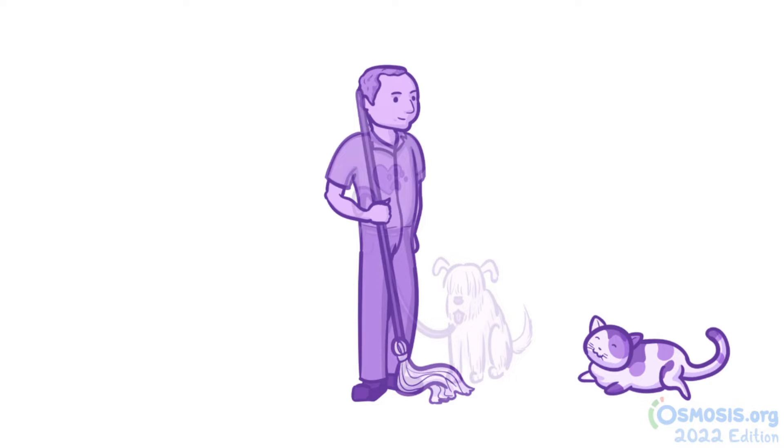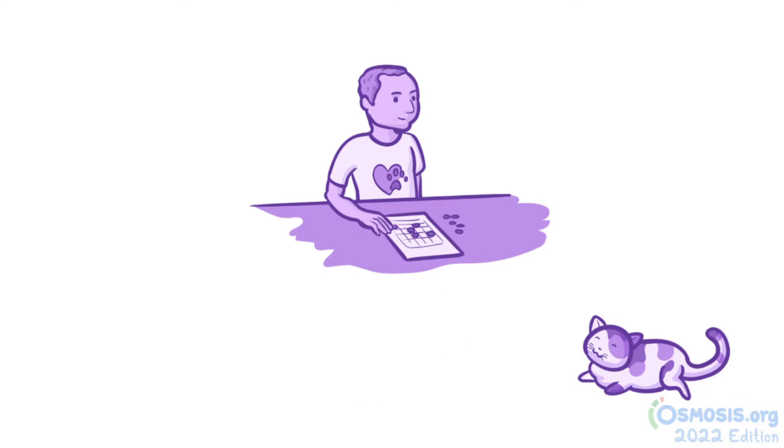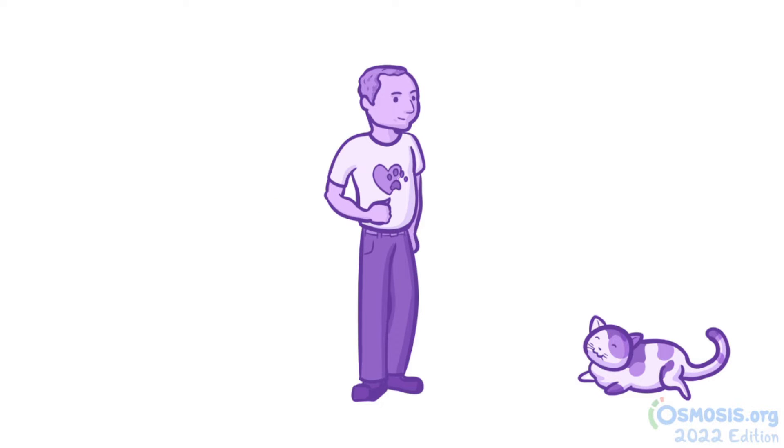Zach's only real splurge was a weekly bingo night that he had been attending since his divorce finalized. One afternoon, Zach was cleaning the high school yard when he experienced weakness in his legs.